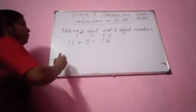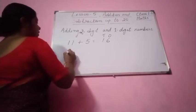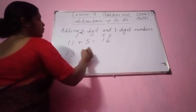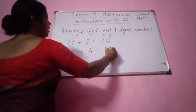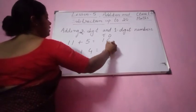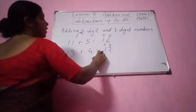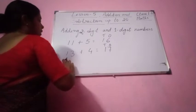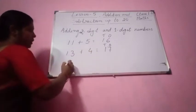Next, let us take any other number. 13 plus 4. So 13 plus 4 is 17. 1 ten and 7 ones equal to 17.